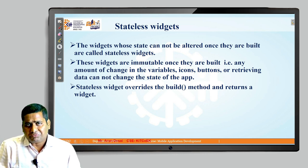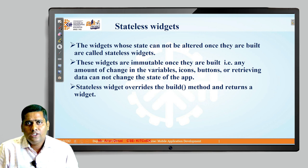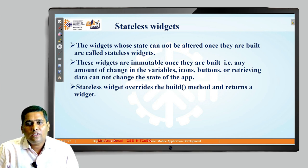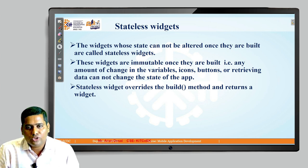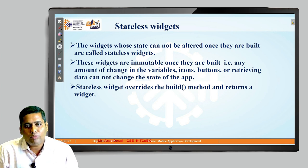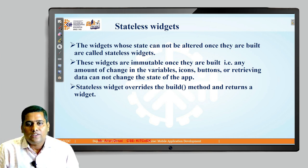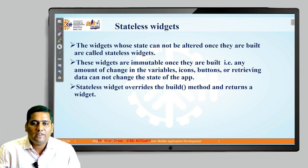The first type is stateless widgets. Widgets whose state cannot be altered once they are built are called stateless widgets — they have only a build method. Once built, no changes can be made to any components; those widgets are immutable. Any change in variables, icons, buttons, or data cannot change the state of the application. Stateless widgets override the build method and return the widget.